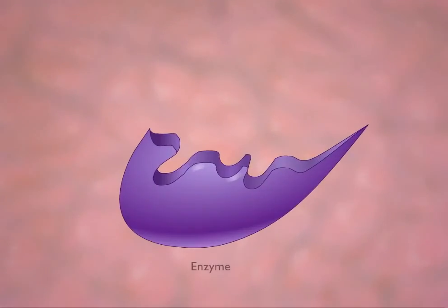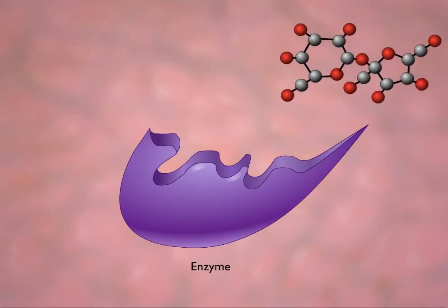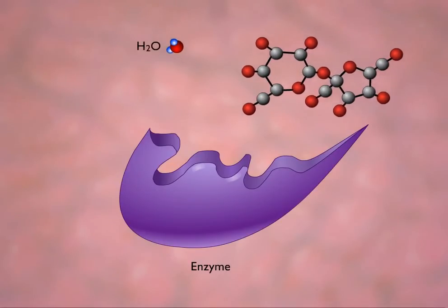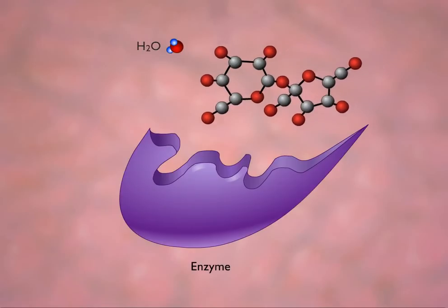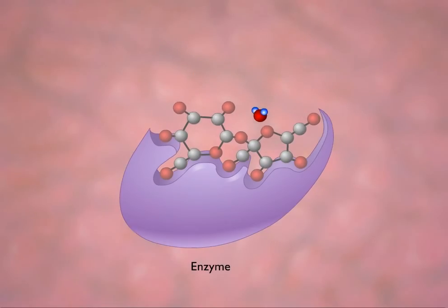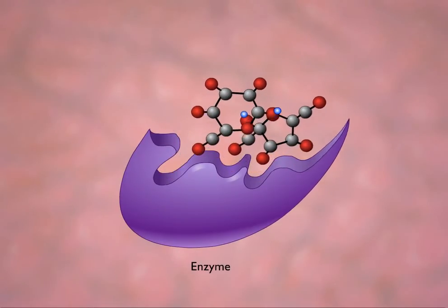This animation presents a graphical representation of the way that sucrase catalyzes the hydrolysis of the common disaccharide sucrose, which we know as table sugar, into its component monosaccharides — glucose, or blood sugar, and fructose, or fruit sugar.